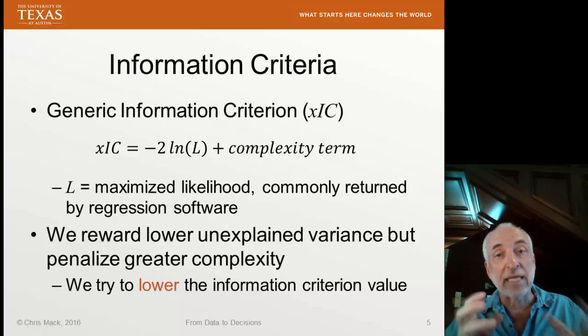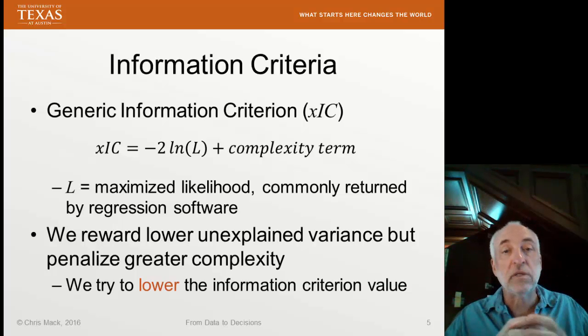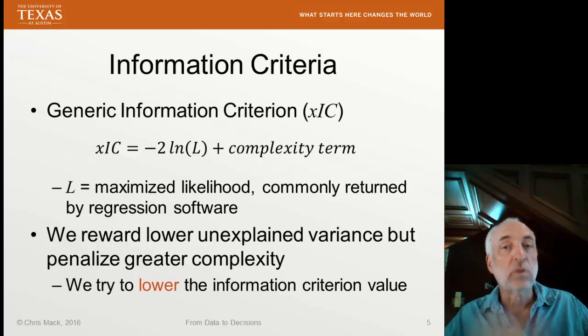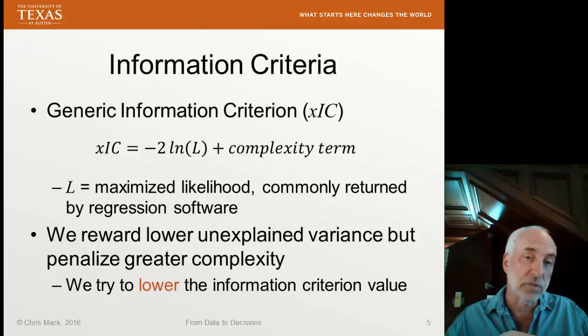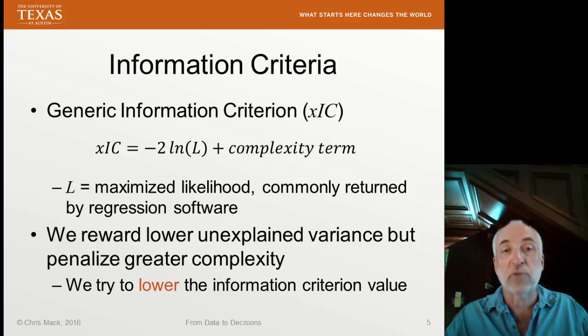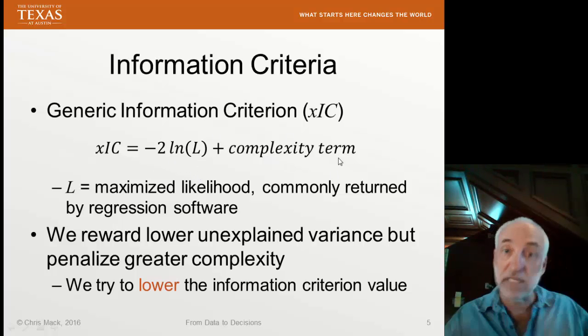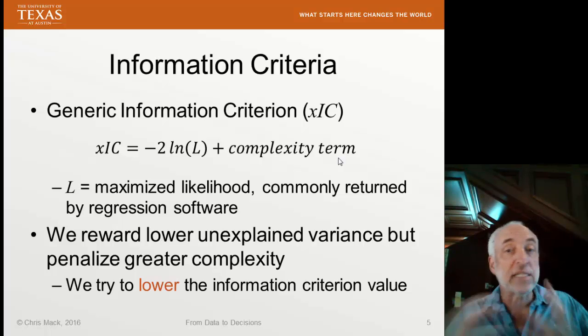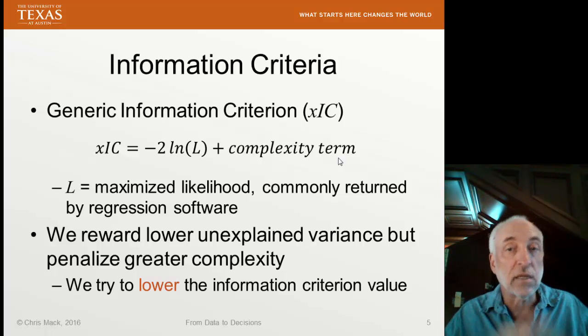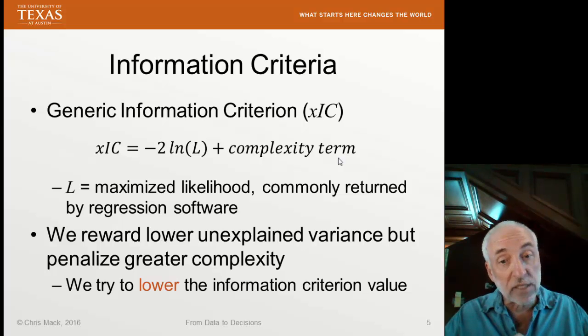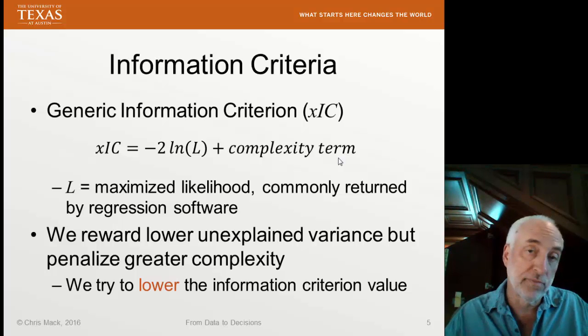The goal then is to balance the improved likelihood by adding more model parameters to the worsening complexity when we add those model parameters. So every time you add a model parameter, maximized likelihood is going to go up and minus 2 log likelihood is going to go down. But our complexity term is going to increase every time I add a parameter. So the idea is to find the right balance and we want to find the model that produces the smallest information criterion value. This is generically how they work.